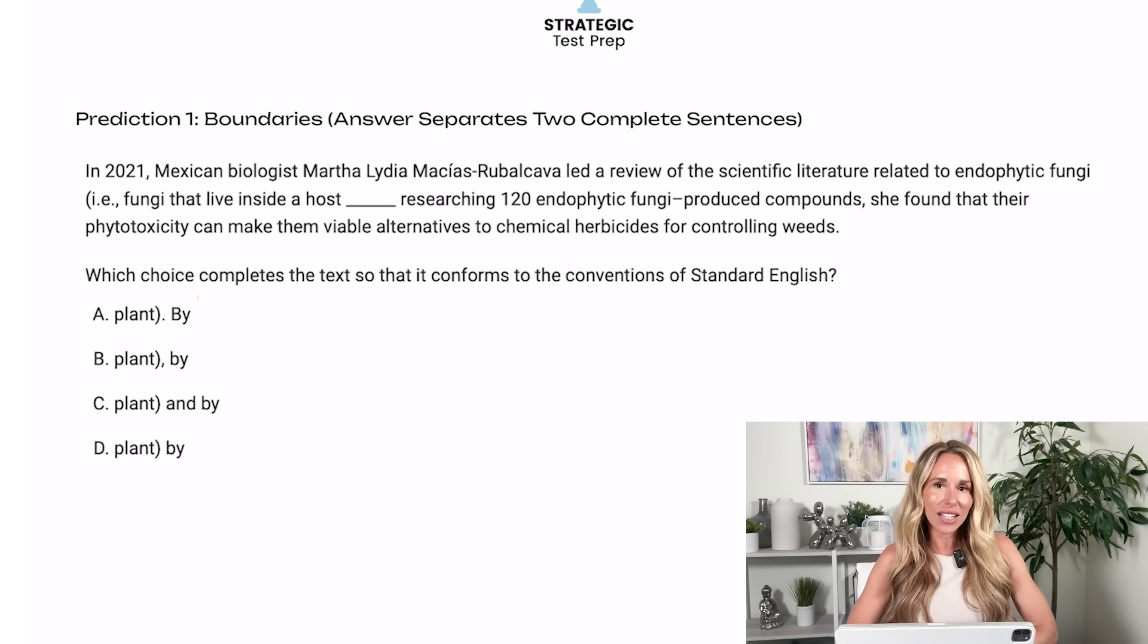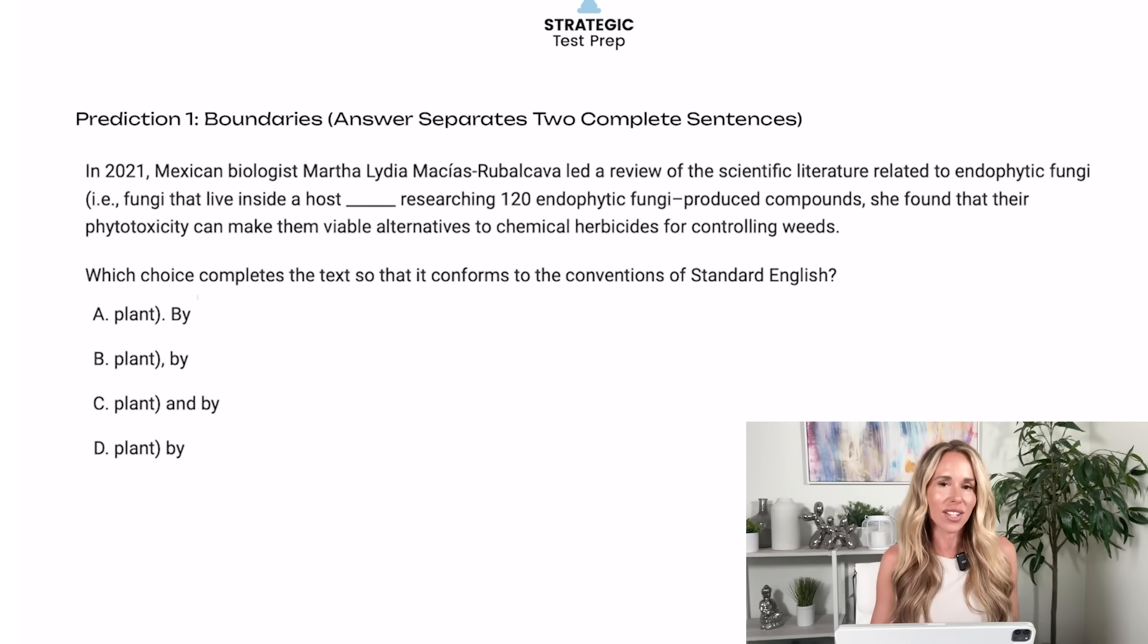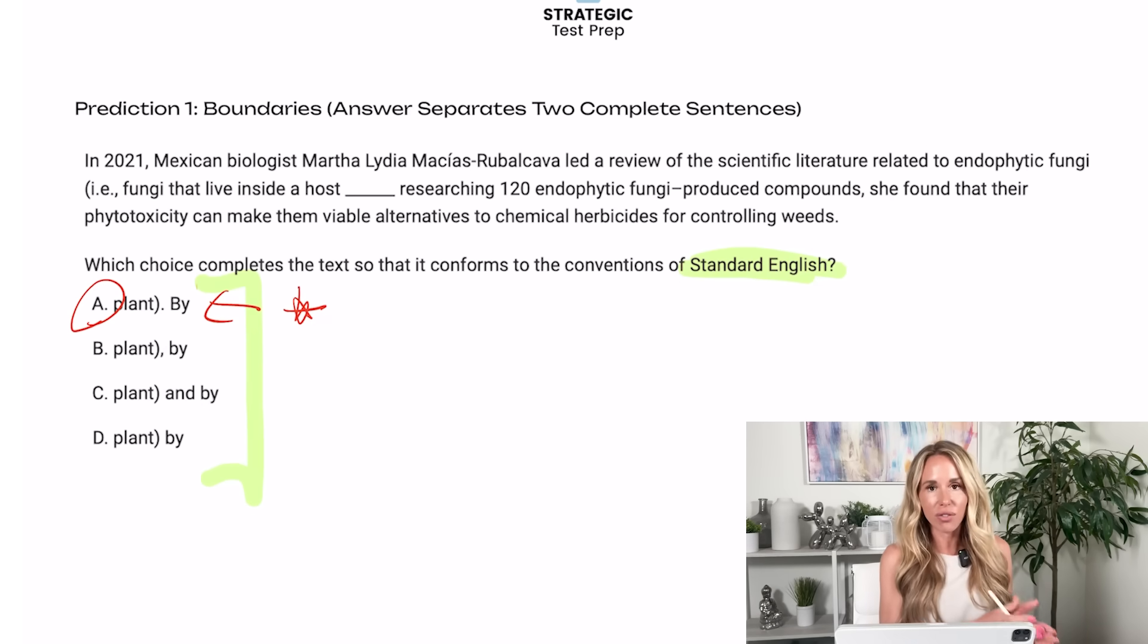I think that they're going to give you a boundaries question on the standard English convention side where one of the answer choices separates two complete sentences. So whenever you're on a standard English convention question, I recommend going to the answer choices first and assessing what they give you. As you can see, there's only one answer here that can separate two complete sentences. The rest cannot. So I already know by default, the answer is A. What I would do is flag the question to come back to and read it later if I have extra time and make sure I have two complete sentences. But honestly, this strategy has been foolproof ever since I started using it.